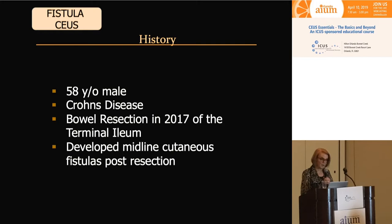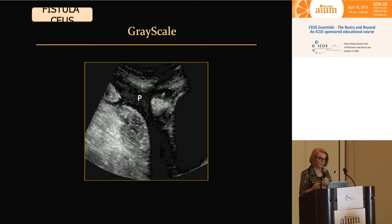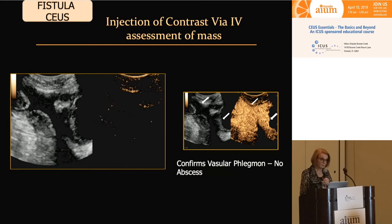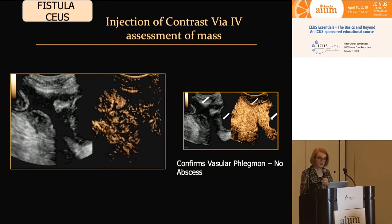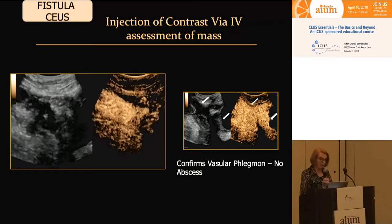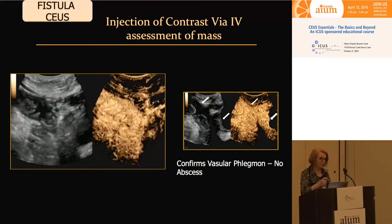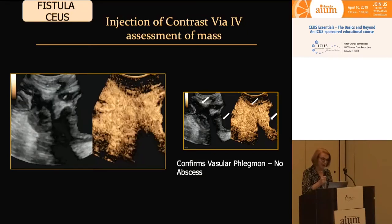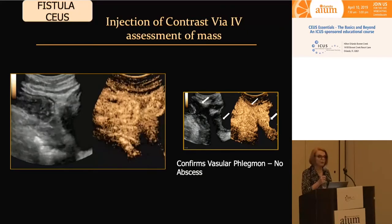Now we'll look at fistula imaging with contrast ultrasound. This is a 58-year-old male with Crohn's disease who had bowel resection in 2017 and developed a midline cutaneous fistula post-resection. Although he had multiple attempts to characterize what was going on, they were somewhat unsuccessful. On grayscale, we're looking in the pelvis — the bladder is on the right side of the image. There's a phlegmonous, hypoechoic mass interdigitating with the fat, labeled P. A failed contrast fistulogram had been performed previously.